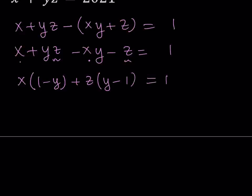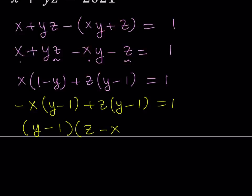It's important to get one on the right-hand side because one only has so many factors. We have 1 - y and y - 1, so we can negate the second term. I'll put a negative sign with the x so that I can make this y - 1. Since we have y - 1 as a common factor, let's write it as (y - 1)(z - x) = 1.